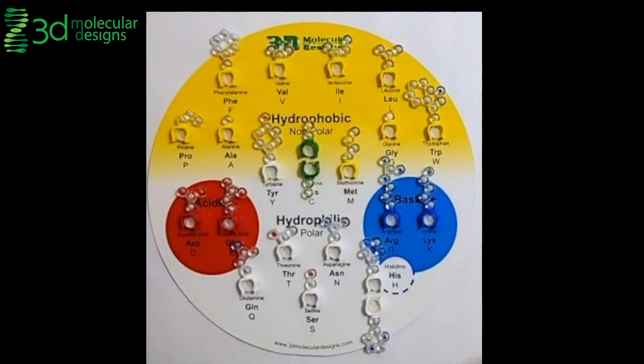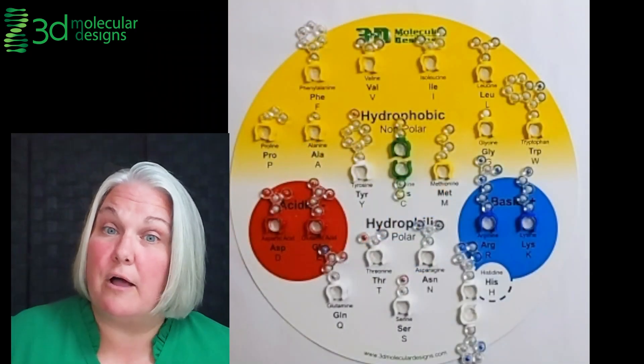Then we can look and analyze the different kinds of R groups using this chemical properties circle. With the chemical properties circle, we can go through and have them first identify all 20 standard amino acids, then they can look at the 11 non-essential amino acids that we make through different metabolic pathways like the pentose phosphate pathway, glycolysis, and the citric acid cycle.